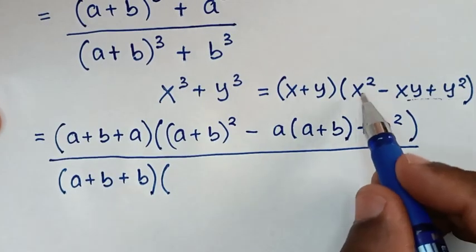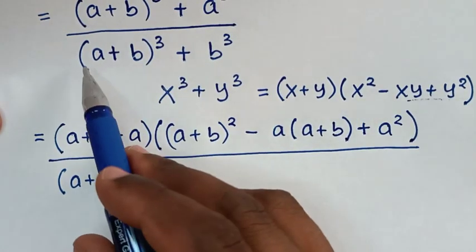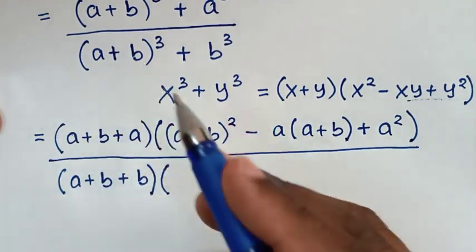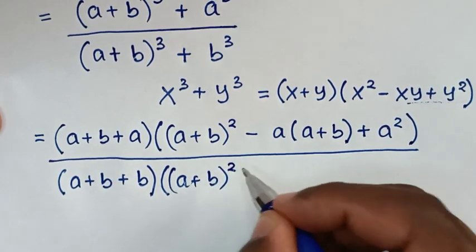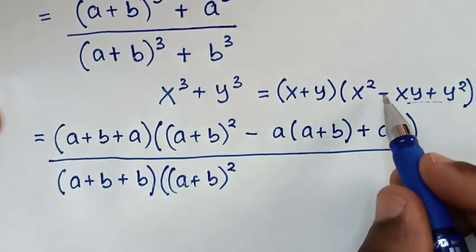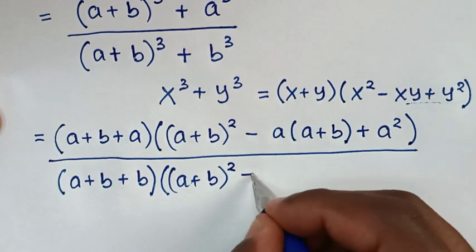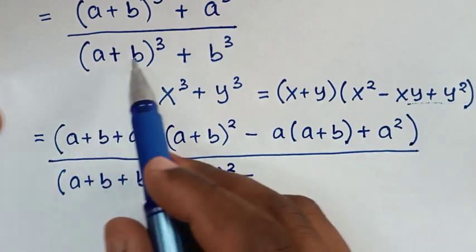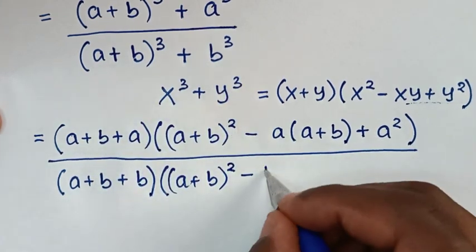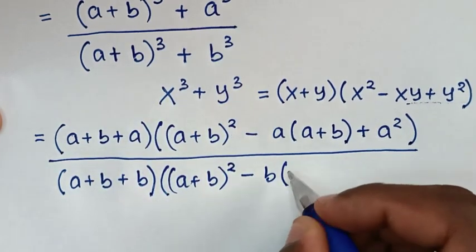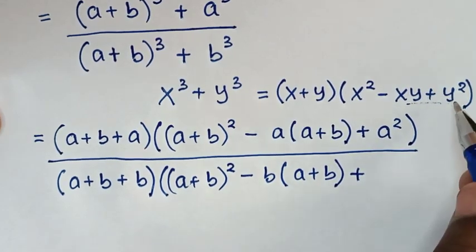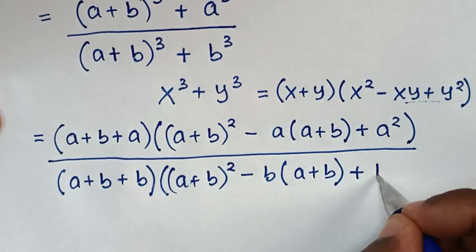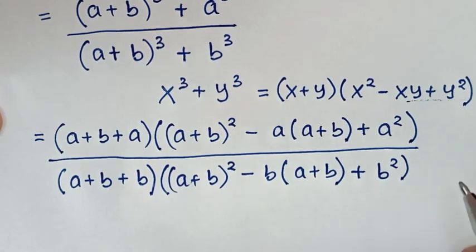Then, bracket X square, it will be A plus B square. So, A plus B bracket square. Then, minus XY, it will be minus A plus B times B. So, it will be B bracket A plus B bracket. Then, plus Y square, it will be this B square. Then, bracket.